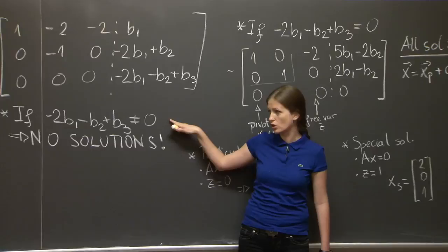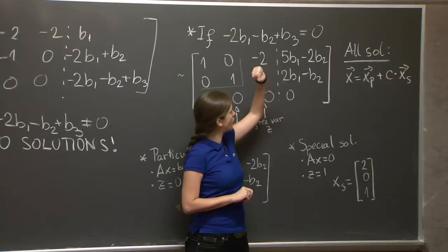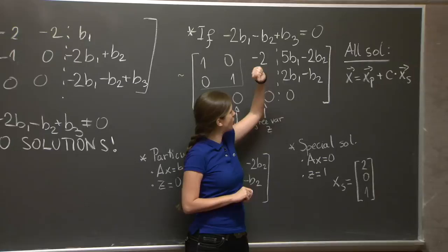Let me recap. In case this particular combination of parameters is not 0, there's no solutions. In case this particular combination of parameters is equal to 0, there are solutions. There are as many of them as there are real numbers c, and they're all of this form for these two vectors. And that's all I wanted to say today.